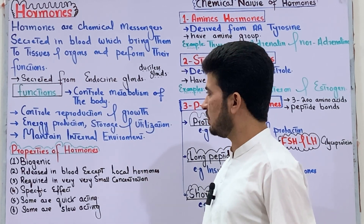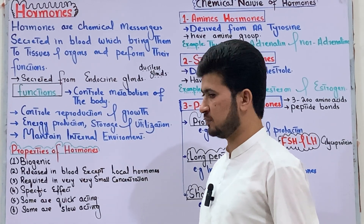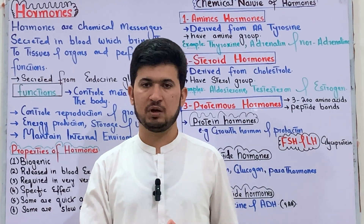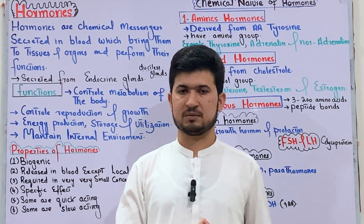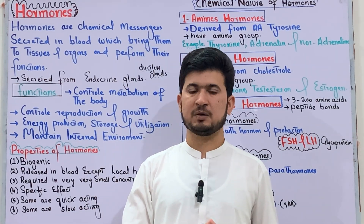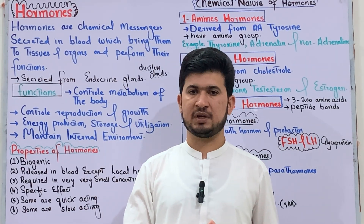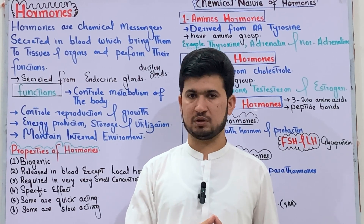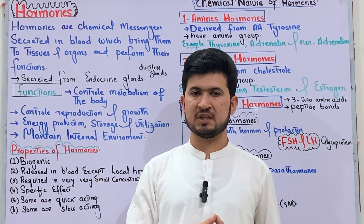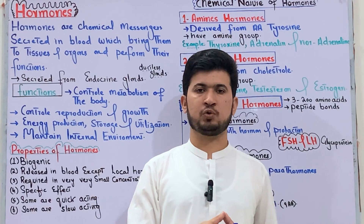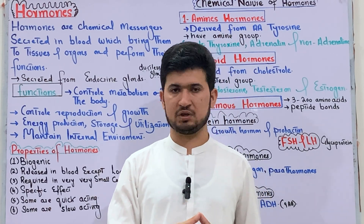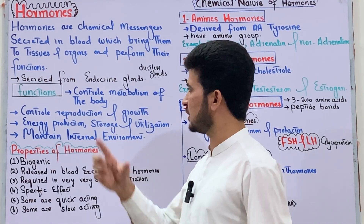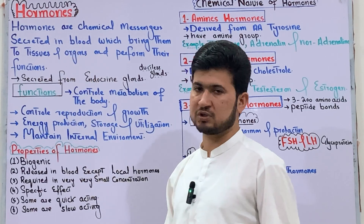Hormones control the body's metabolism. Metabolism is of two types: anabolism and catabolism. Anabolism is the process in which small molecules combine to form large molecules. Catabolism is the process in which large molecules are broken down. Whatever metabolism occurs in the body, hormones are responsible for it.